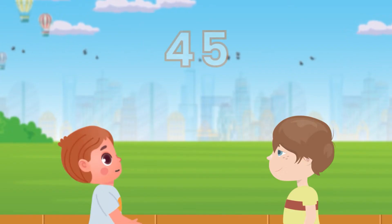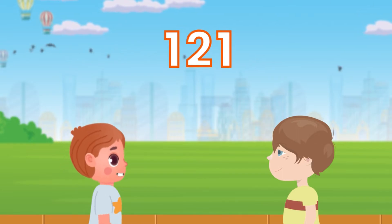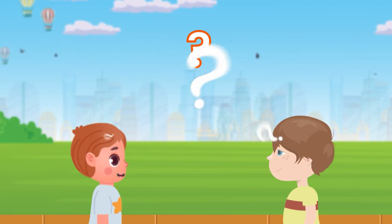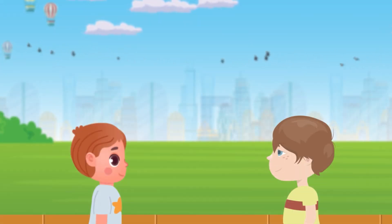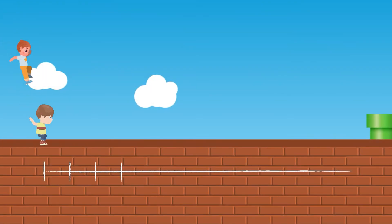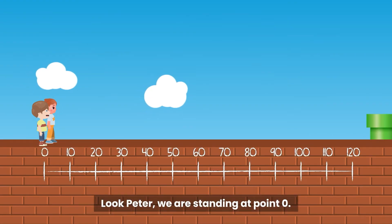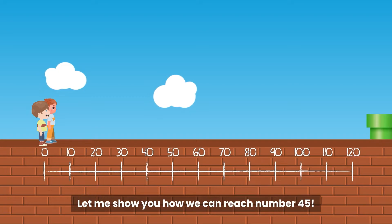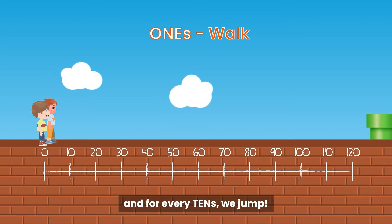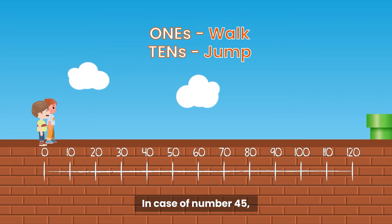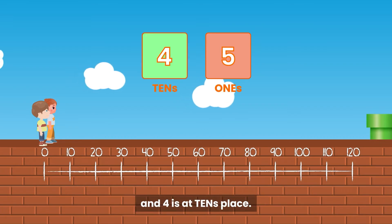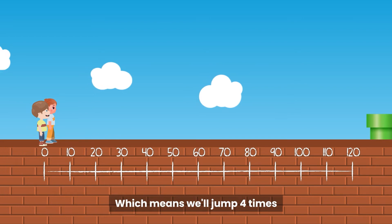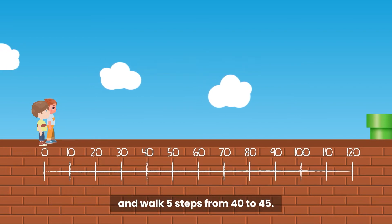But what about a number like 45, or a three-digit number like 121? How will we find the place value? To answer this, let's jump into the number line and visualize this. We are standing at point zero. For ones we walk, and for tens we jump. In the case of number 45, the place value of 5 is at the ones place and 4 is at the tens place, which means we will jump four times because four times 10 is 40, and walk five steps from 40 to 45.